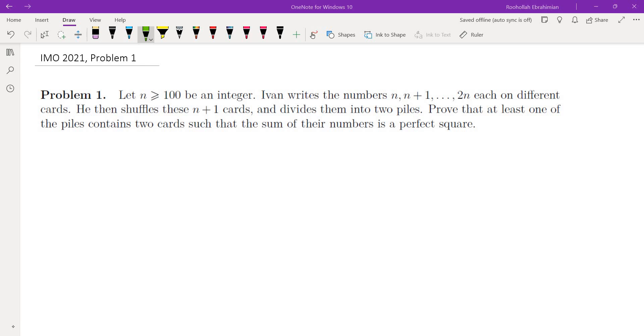Then we shuffle these cards, and these n plus 1 cards are divided into 2 piles. We want to prove that one of the piles contains 2 numbers such that the sum of their numbers is a perfect square. So what I did was I started with n equals 100, and I tried listing these in 2 different piles and see when I get a contradiction.